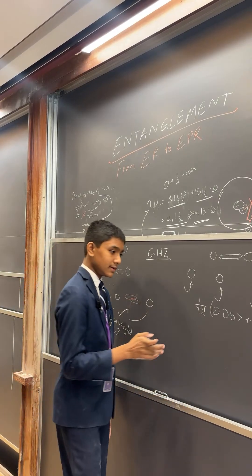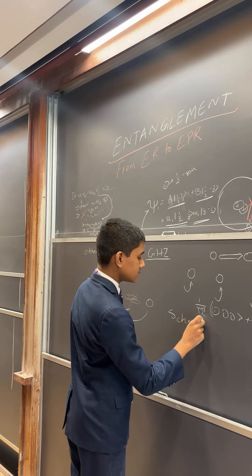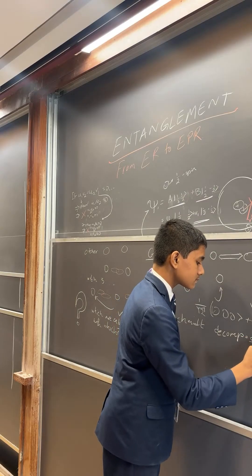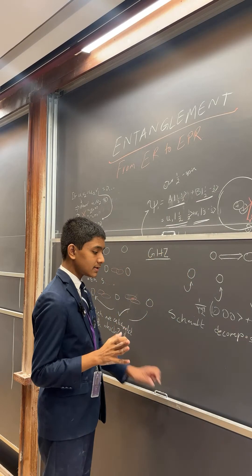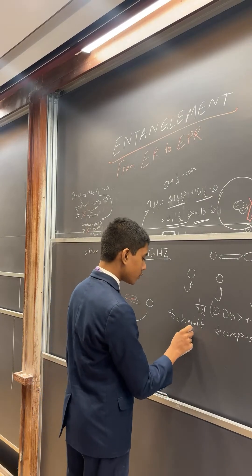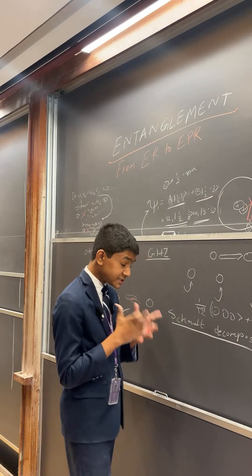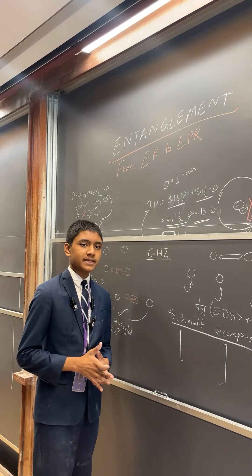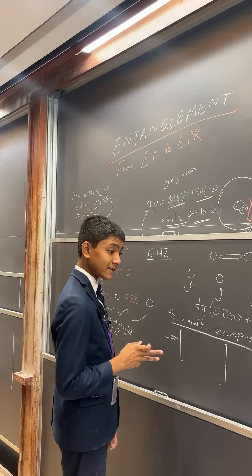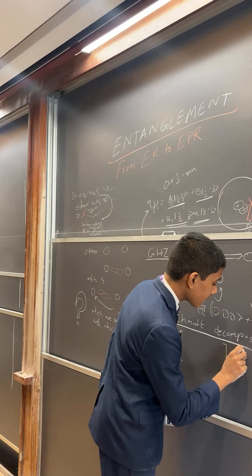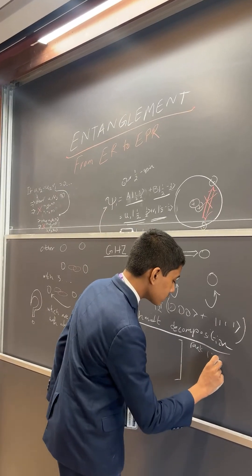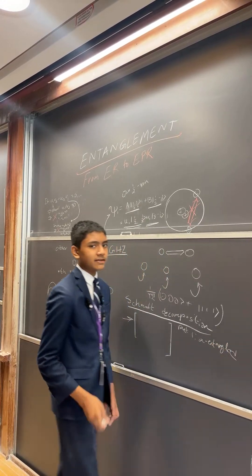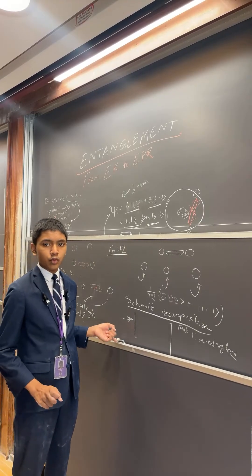This is where Schmidt decomposition comes in. Schmidt decomposition takes the state of all these qubits and writes it as a matrix with some rank. If a particle is rank one, it's unentangled. If it has a higher rank, that essentially means different levels of entanglement — you could say it gets more and more entangled.